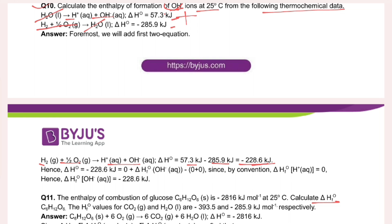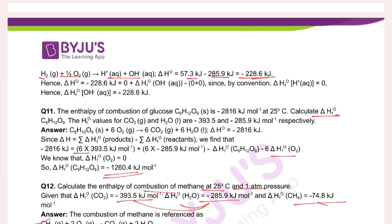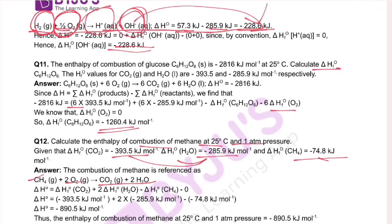This is the reaction. Using the enthalpy change formula: enthalpy change equals enthalpy change of products minus enthalpy change of reactants. We know that the enthalpy of oxygen is zero. Adding the two equations gives a single equation, and delta H equals minus 228.6 kJ for the enthalpy of formation of OH⁻ ions.